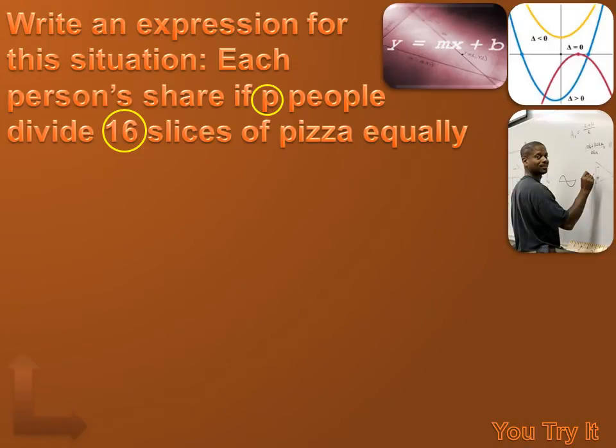Well, they've asked me to write an expression for this situation. Each person's share if P people divide 16 slices of pizza equally. Well, I've circled the P, and I've circled the 16, because I know my expression is going to include a P and a 16. Now, I've just got to figure out how to combine the P and the 16. Do I add, subtract, multiply, divide? Well, let's read the question and see if we can figure it out. It says, each person's share if P people divide 16 slices. We're going to divide 16 slices among P people. So, we're going to divide 16 by P.